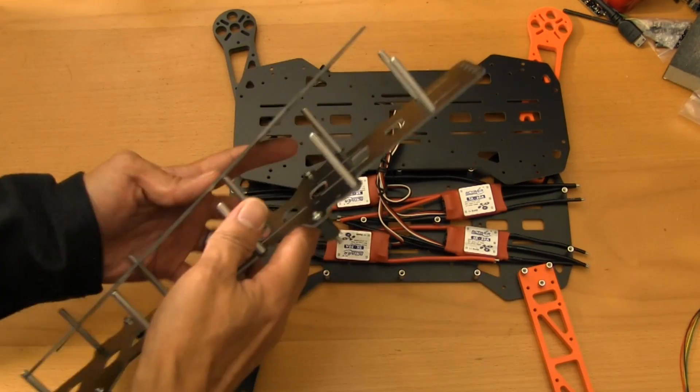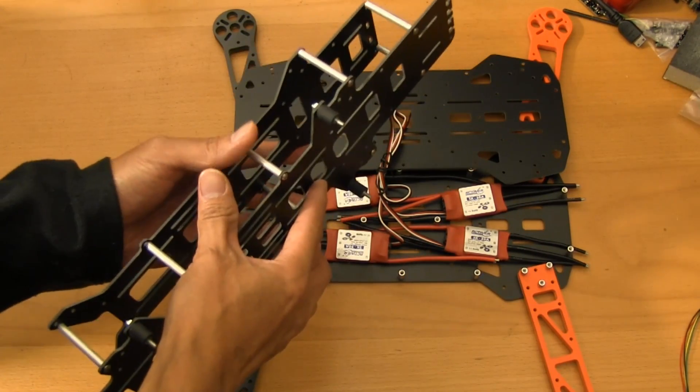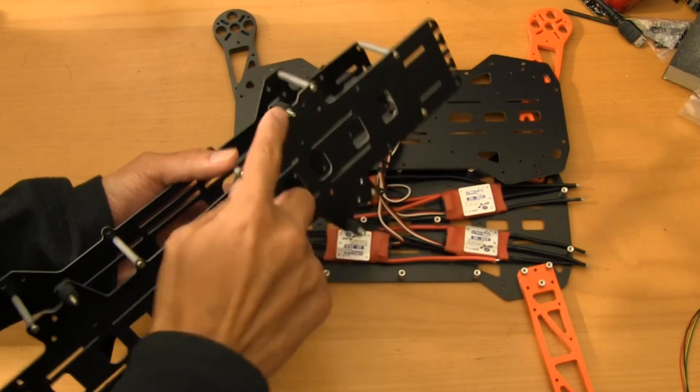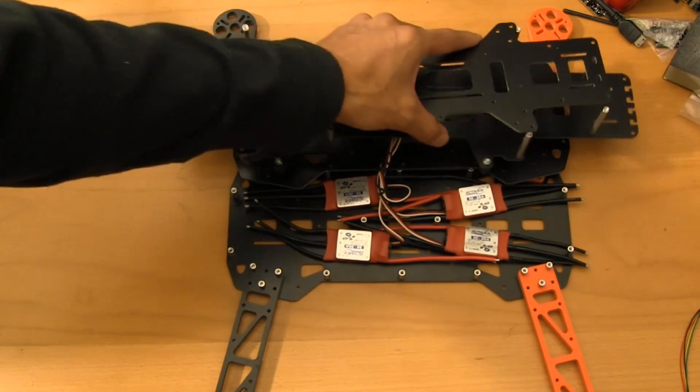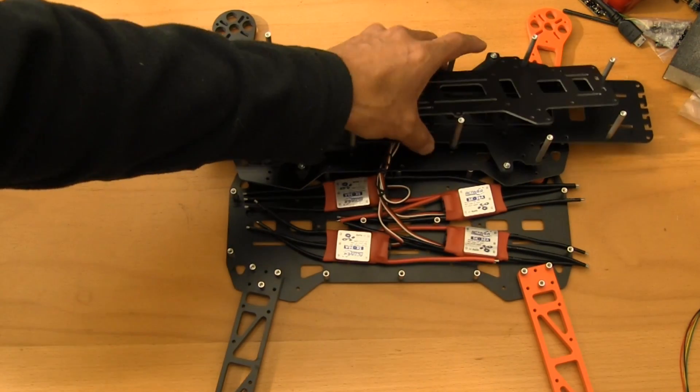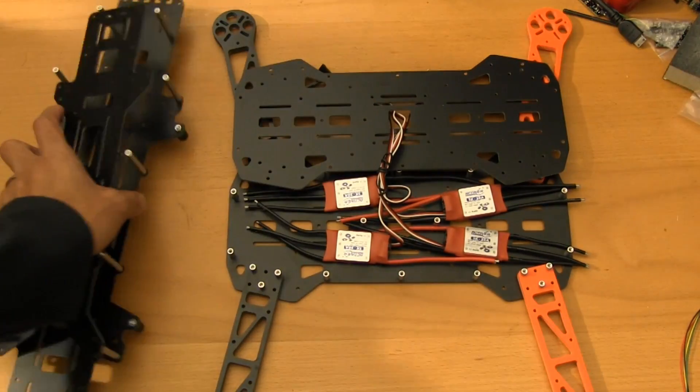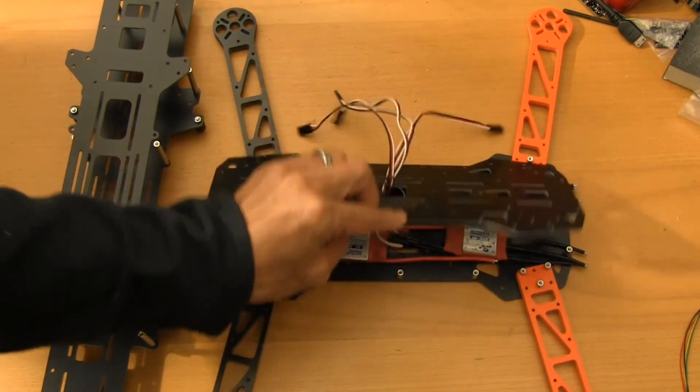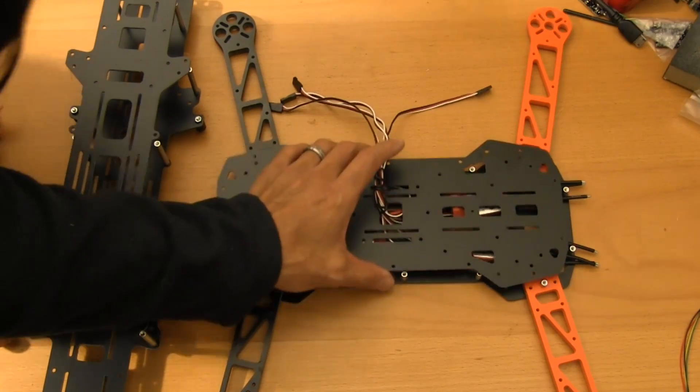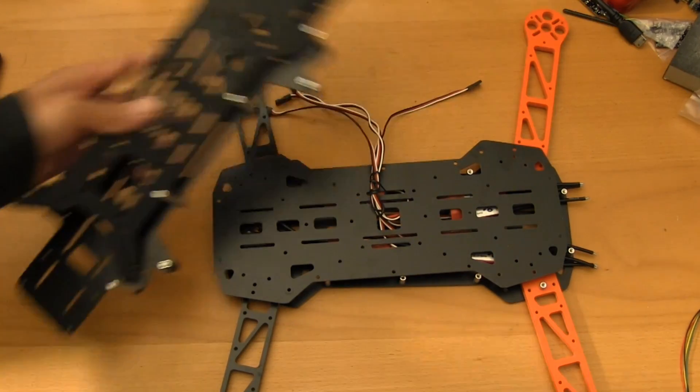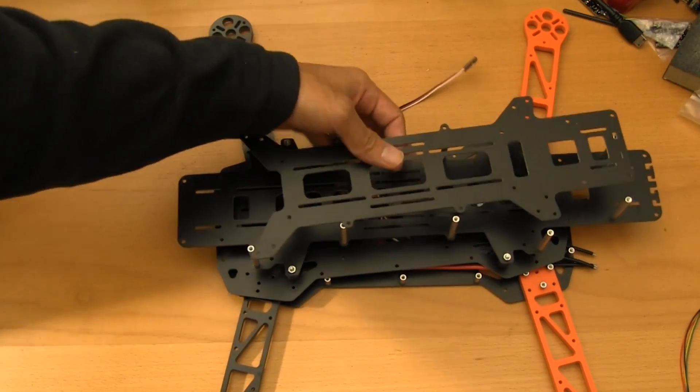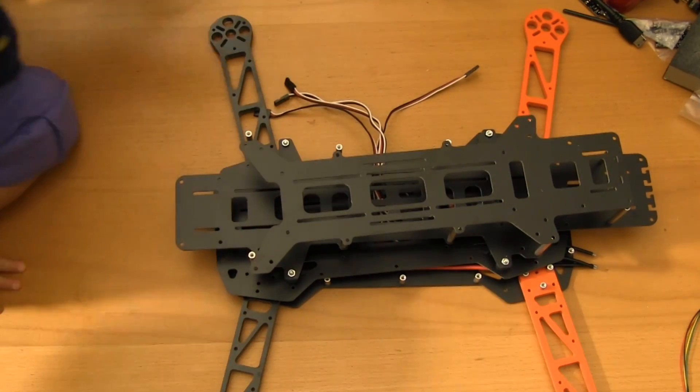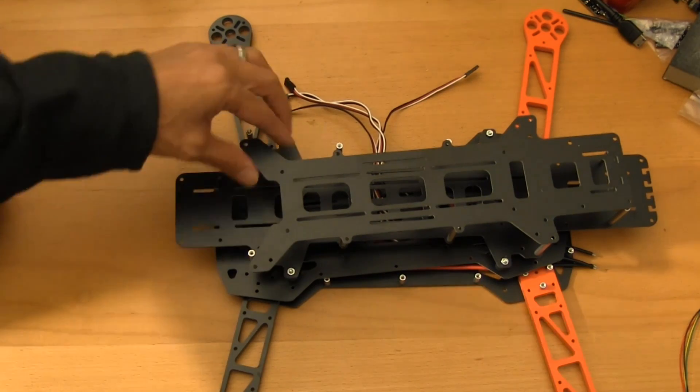The way that they do this is actually pretty elegant and simple when you think about it. It's just four rubber bobbins that connect in there. They don't necessarily absorb all of the vibrations, but what they do is make it very difficult for them to transmit into the rest of the frame. When you put everything together, all the vibrations get stopped right there.